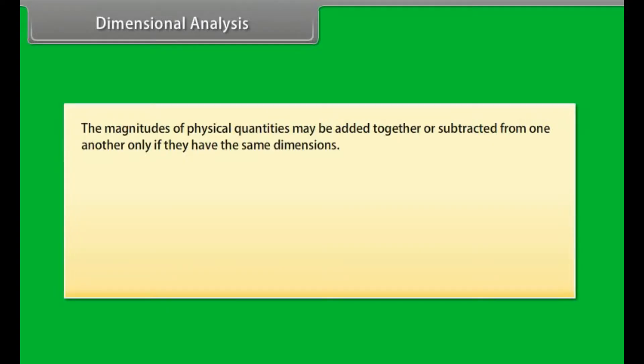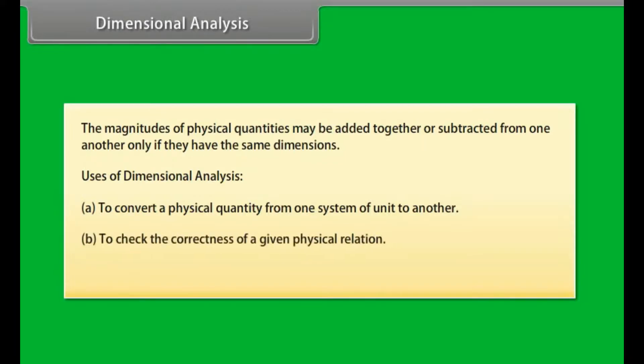Dimensional analysis. The magnitudes of physical quantities may be added together or subtracted from one another only if they have the same dimensions. Uses of dimensional analysis: A) to convert a physical quantity from one system of unit to another, B) to check the correctness of a given physical relation, C) to establish a relation among the given physical quantities.